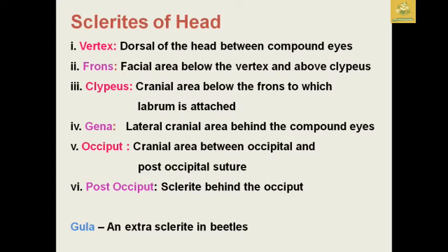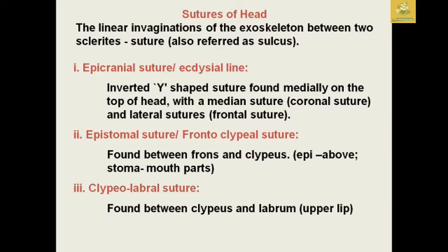The vertex is the dorsal head area between the compound eyes. The frons is the facial area between the vertex and the clypeus. The clypeus is the cranial area below the frons to which the labrum is attached. The gena is the lateral cranial area behind the compound eyes. The occiput is the cranial area between the occiput and postocciput sclerites. The postocciput refers to the sclerites behind the occiput. The gula is an extra sclerite found only in certain beetles.